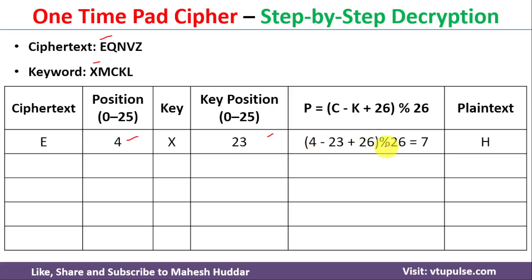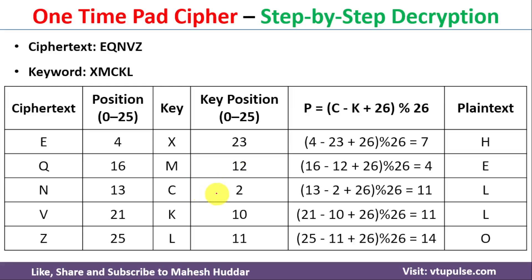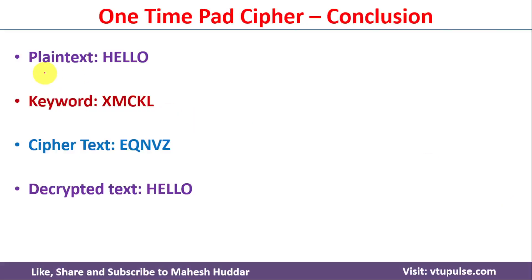So 4 − 23 + 26 mod 26 = 7, and the seventh letter is H. Next, Q is at position 16 and keyword letter M is at position 12, giving us 4, and the fourth letter is E. Similarly, we find the remaining plain text letters, and finally we get the plain text H E L L O.